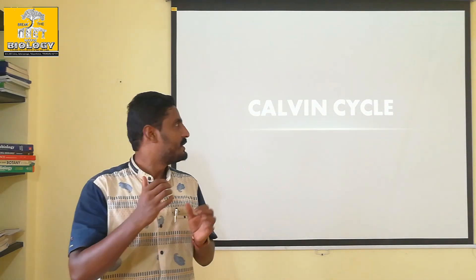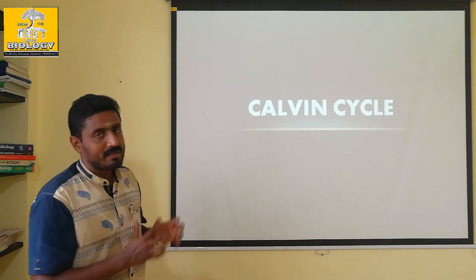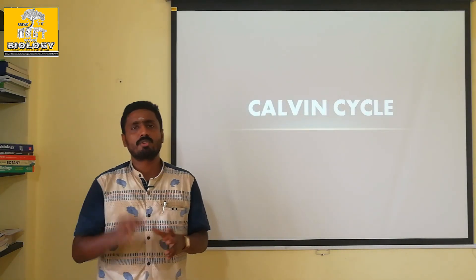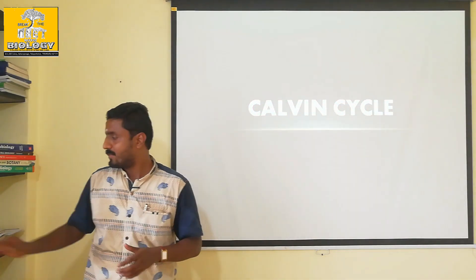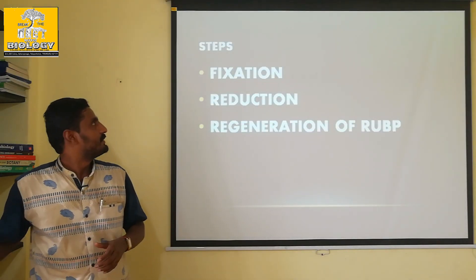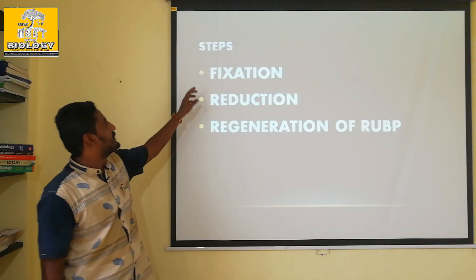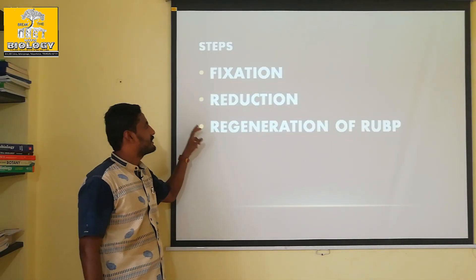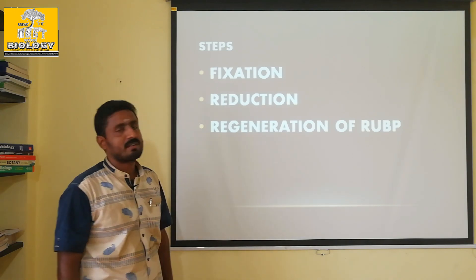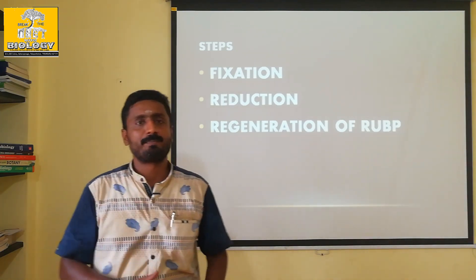In Calvin Cycle, there are three types of processes: Fixation, Reduction, and Regeneration of RuBP.